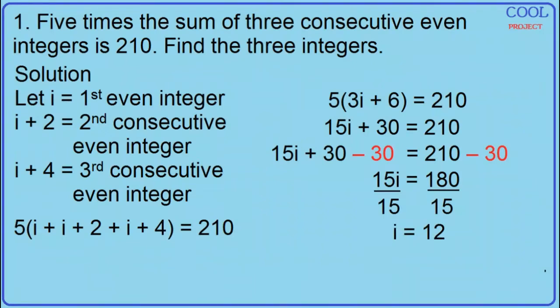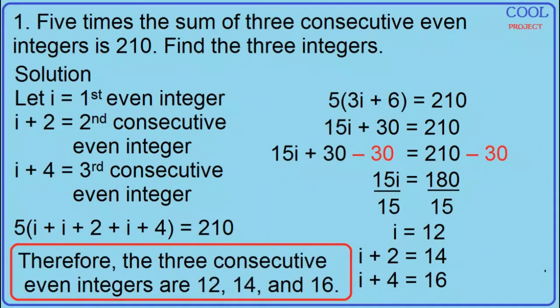Substitute 12 for i: i plus 2 is equal to 14, and i plus 4 is equal to 16. Therefore, the 3 consecutive even integers are 12, 14, and 16.